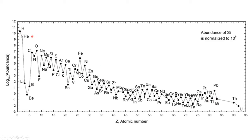On Earth, there's actually a helium shortage. Helium is so light that it can essentially escape Earth's gravity. So there is a shortage of helium on Earth, even though it is the second most abundant element within the universe as a whole.